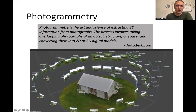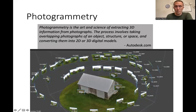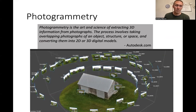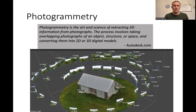Photogrammetry, from a quote by Autodesk, is the art and science of extracting 3D information from photographs. The idea is that we're going to take a whole bunch of two-dimensional images of some object or a landscape, and use those images to reconstruct that scene in three dimensions. This could be a house, a small object like a cell phone or a small artifact, or a large landscape — we can do photogrammetry on acres and acres of land. The scale doesn't necessarily matter, although it will affect the specific details, but the basic process is the same: we take photographs and convert those to 3D digital models.